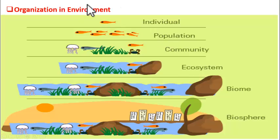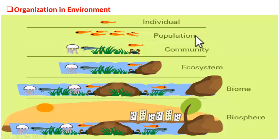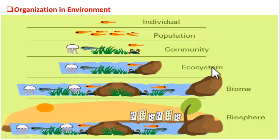Our environment is a well-organized structural entity. In this structure, the individual forms the basis. Several individuals of the same species make up a population. Several populations of different species make up a community — for example, fish population, crabs, grass, jellyfish make up a community. This community with its interaction with the abiotic component forms an ecosystem.